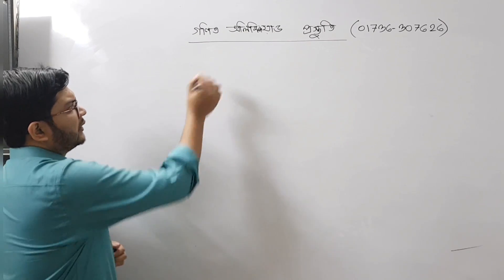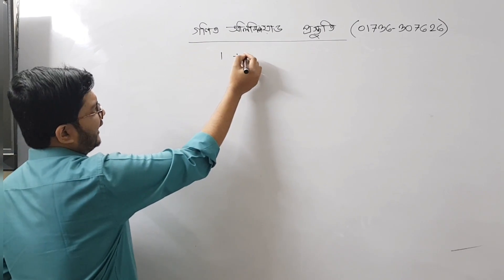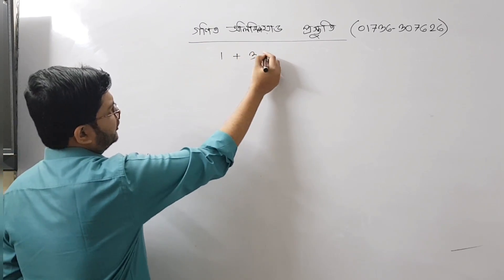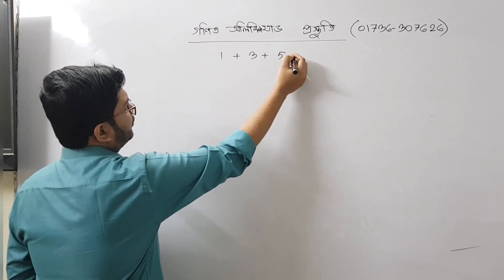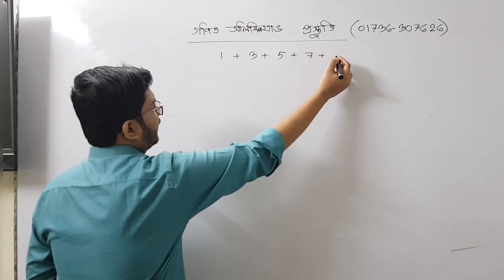The problem is: 1, 3, 5... We have the series of odd numbers listed out.